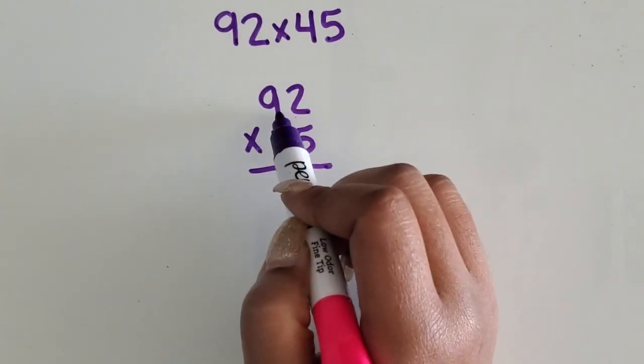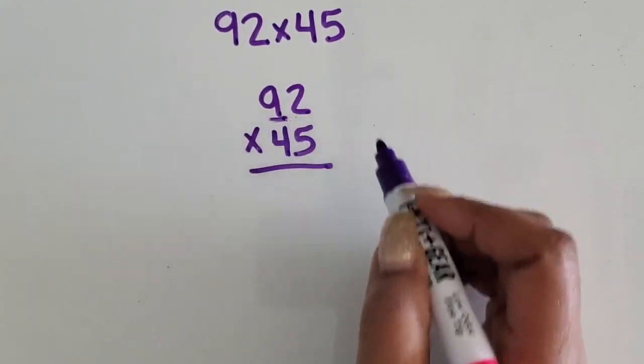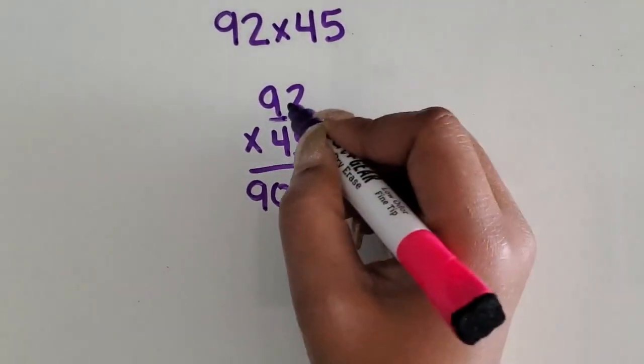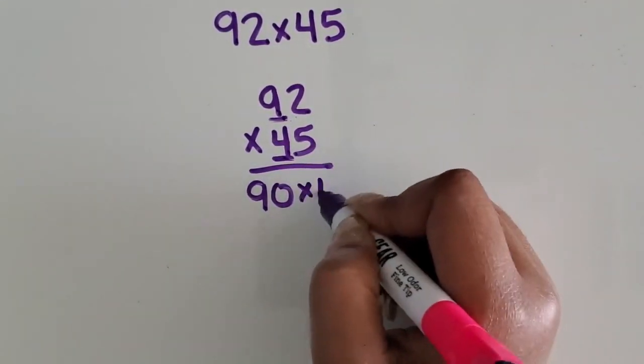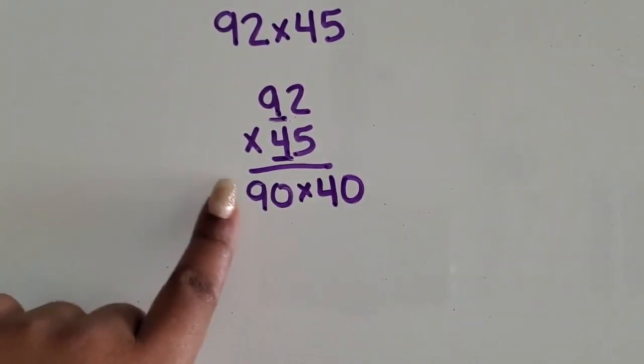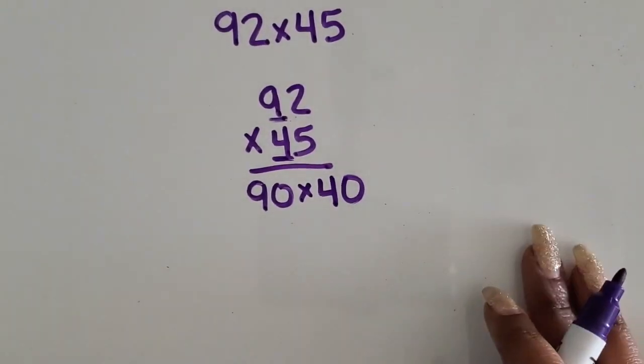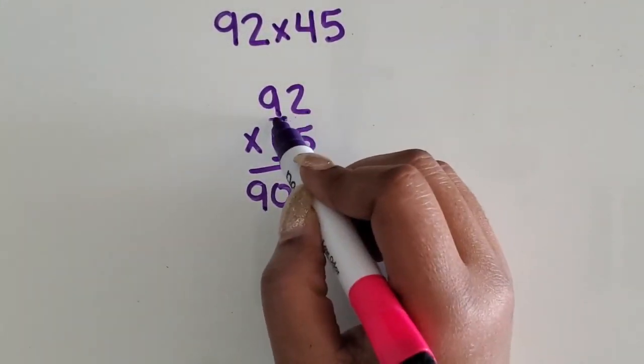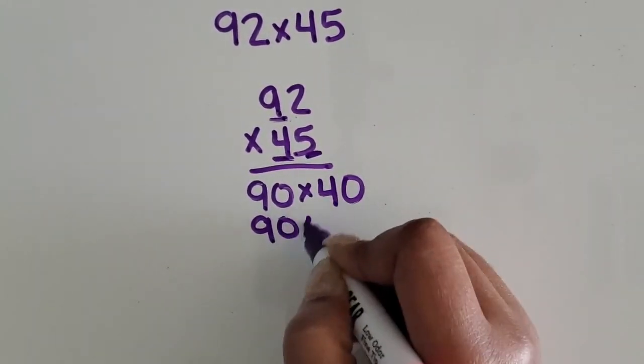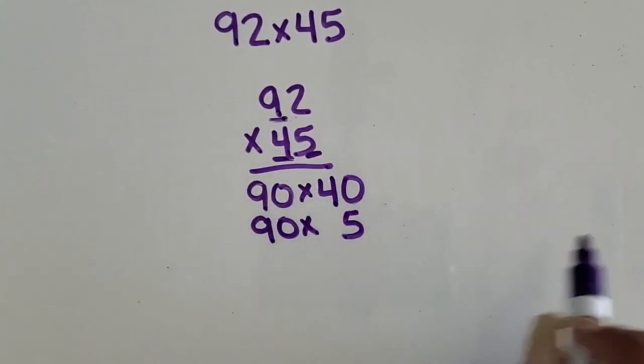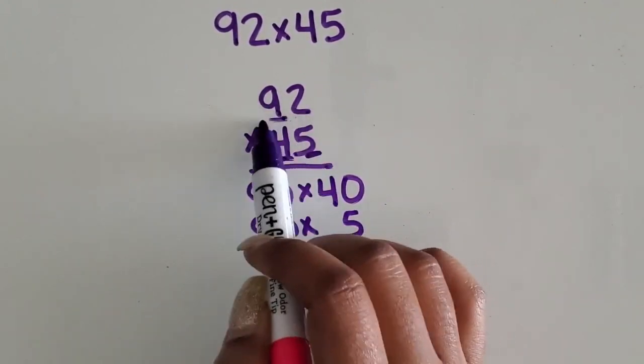So I'm going to start with the tens place on my top number. We have a nine in the tens place, so that is 90, and we're going to multiply it by the tens place on the bottom number, which is 40. I would like students to write each of their expressions out first and then solve it afterwards. Now we're going to take that same 90 and multiply it times the ones on the bottom number, or that second factor, which is five. So we broke up the 45 into 40 and five, and we broke up the 92 into 90 and two.